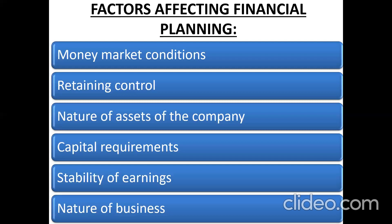Number four talks about capital requirement. When a business organization requires little capital — a larger amount is not required — they can go for a single type of security, such as issuing equity shares. But if a large amount of capital is required, it will be necessary to use different types of securities — could be debentures, preference shares, etc.